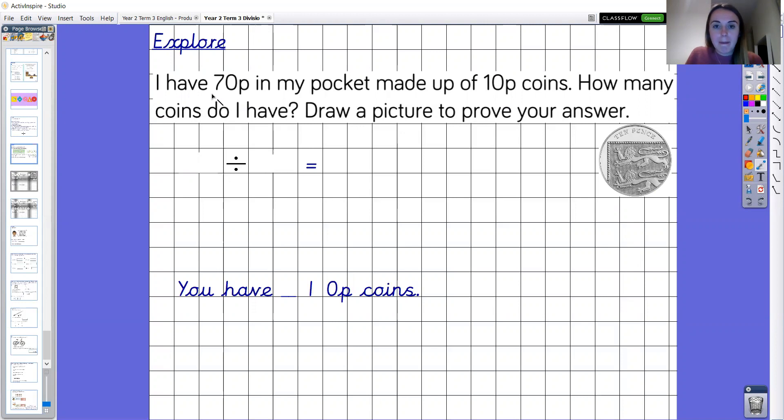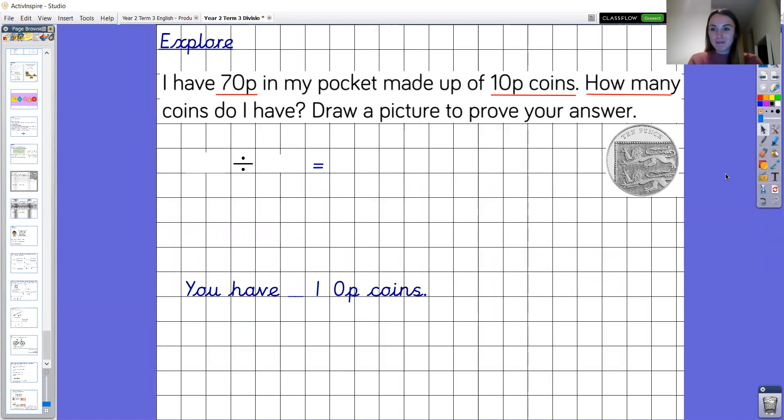I have 70p in my pocket. So 70p is the whole amount which means it must be the dividend in our division. So I have 70p in my pocket made up of 10p coins. That's also some key information. How many coins do I have? So again we're finding out how many. Draw a picture to prove your answer. Okay over to you year two.